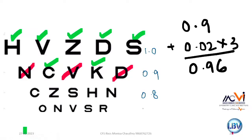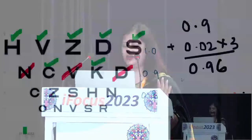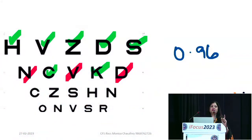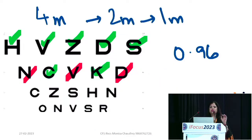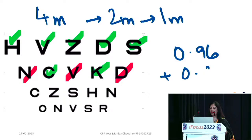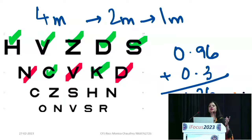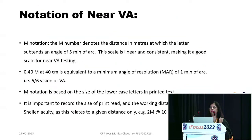LogMAR charts are versatile — you can use the same chart at 4 meters, 2 meters, or 1 meter, which is ideal for low vision assessment. If a patient scores 0.96 at 4 meters but you need to bring the chart to 2 meters, simply add 0.3 to the score. If you bring it further to 1 meter, add another 0.3.